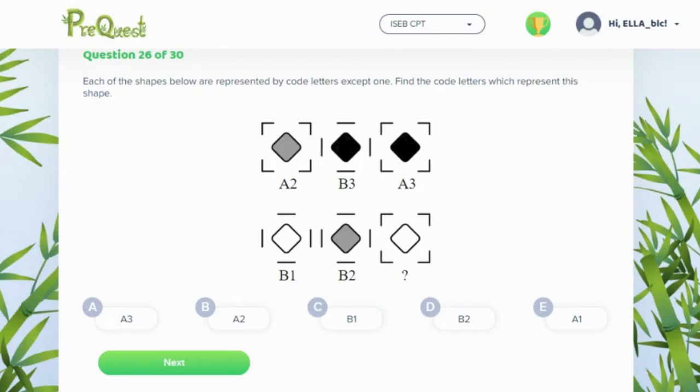This is an example of a nonverbal code question. In nonverbal codes, it's very important to look for similarities in the code and relate those to similarities within the shape.